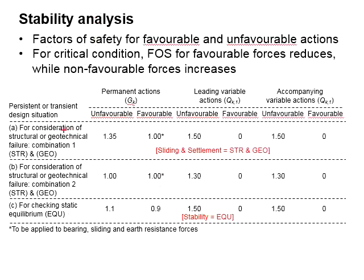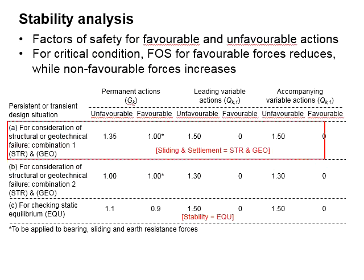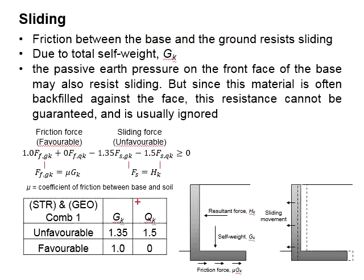For checking sliding, the first condition is adopted. The factors of safety for Gk and Qk, for both favorable and unfavorable conditions, are given. For favorable forces, 1.0 is applied for Gk, while 0 is applied for Qk.